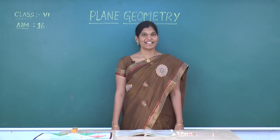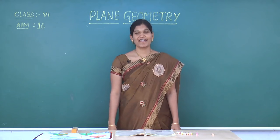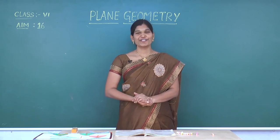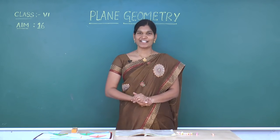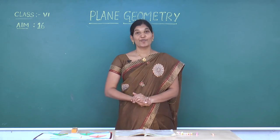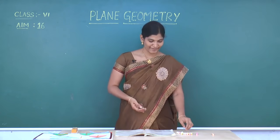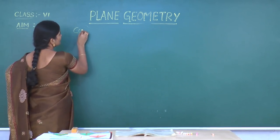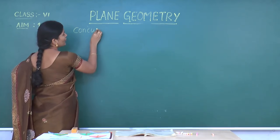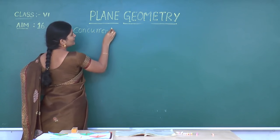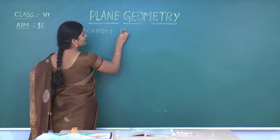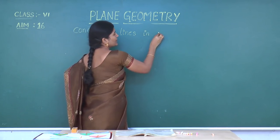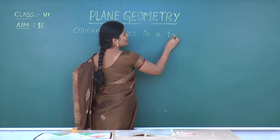Now, this is time to discuss about aim 16. In this aim 16, we are going to learn about concurrent lines of a triangle. Concurrent lines in a triangle.